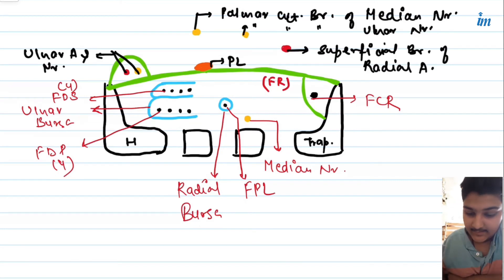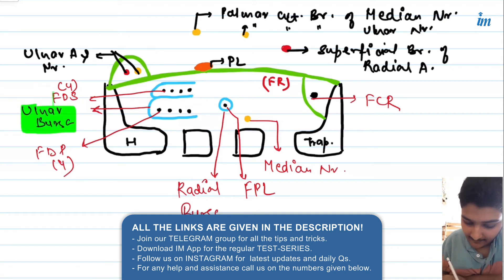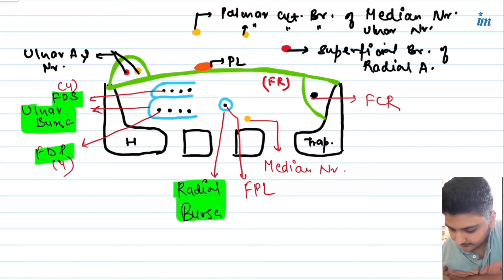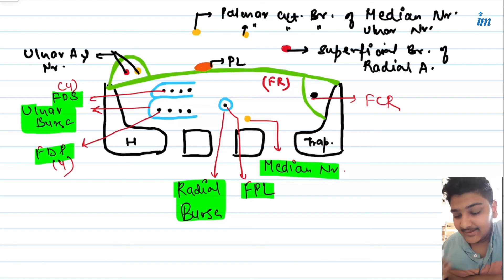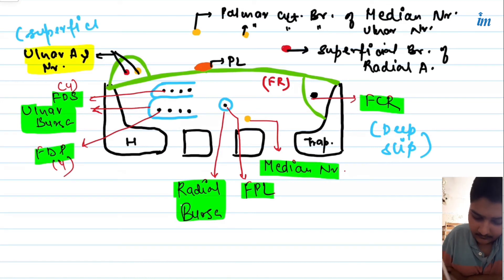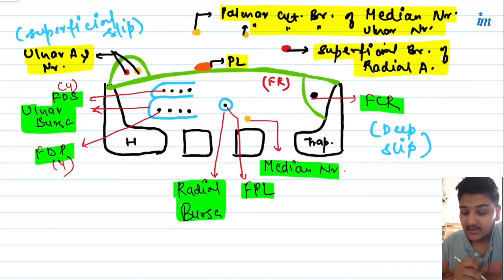Let's review: deep to the flexor retinaculum — ulnar bursa with four tendons of flexor digitorum superficialis and four of flexor digitorum profundus; radial bursa with the tendon of flexor pollicis longus; median nerve; and in the deep slip, the flexor carpi radialis tendon. Superficial — ulnar artery and ulnar nerve in the superficial slip; tendon of palmaris longus; palmar cutaneous branches of median and ulnar nerves; and the superficial branch of the radial artery.